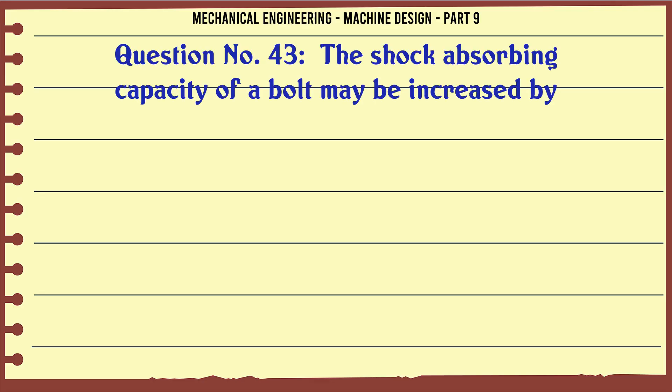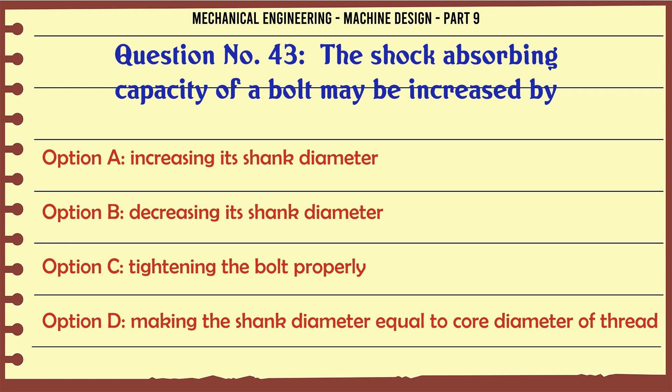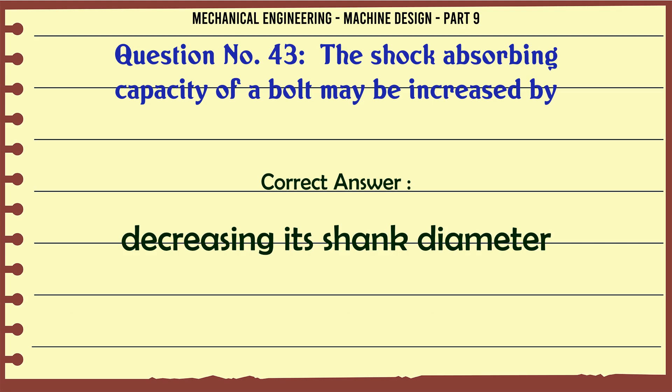The shock absorbing capacity of a bolt may be increased by: A. Increasing its shank diameter, B. Decreasing its shank diameter, C. Tightening the bolt properly, D. Making the shank diameter equal to core diameter of thread. The correct answer is Decreasing its shank diameter.